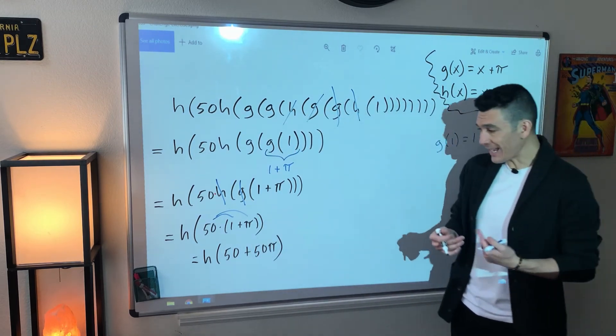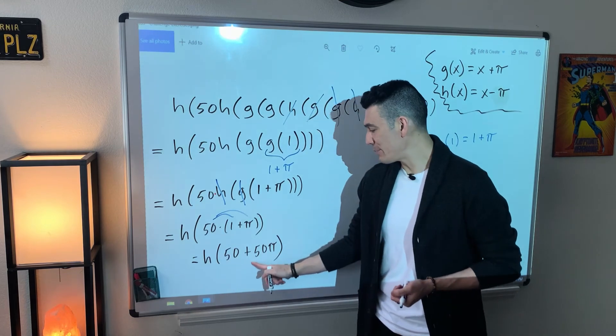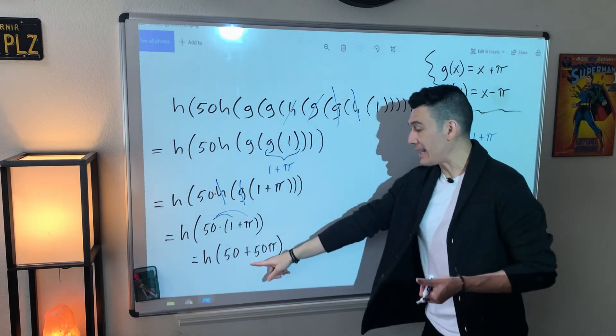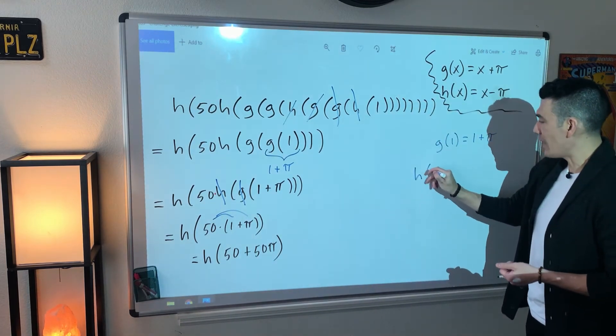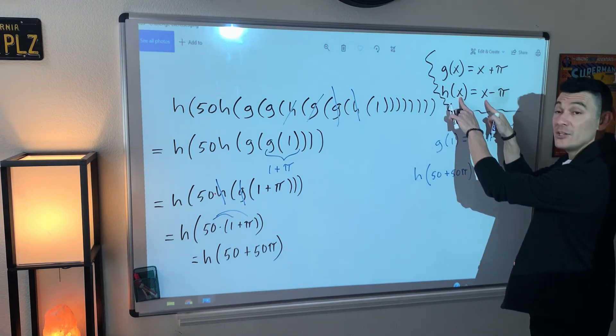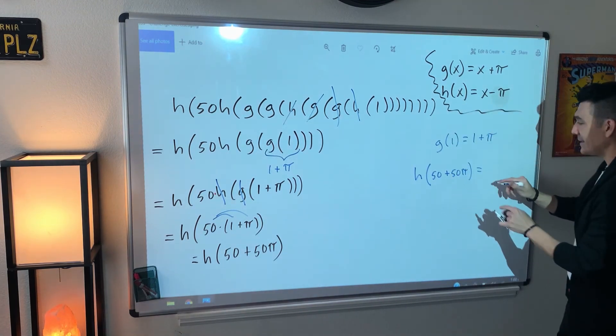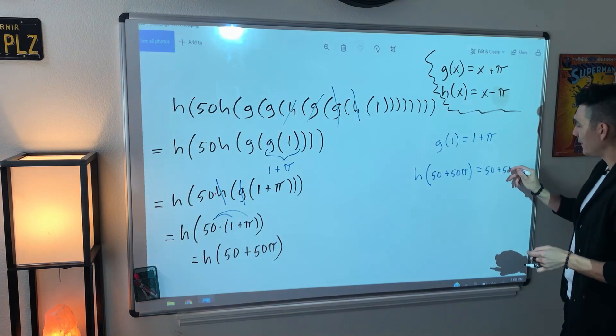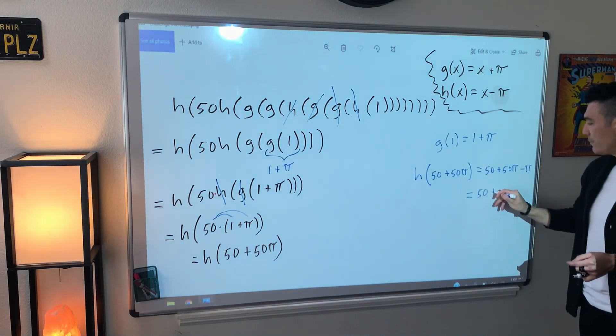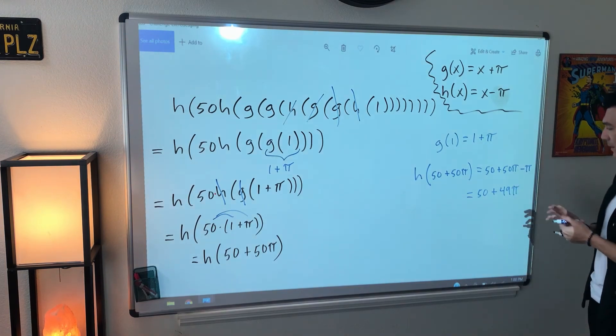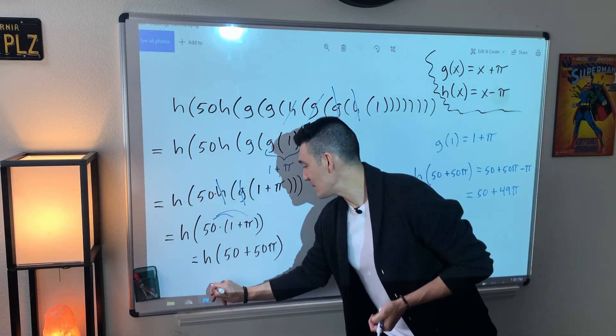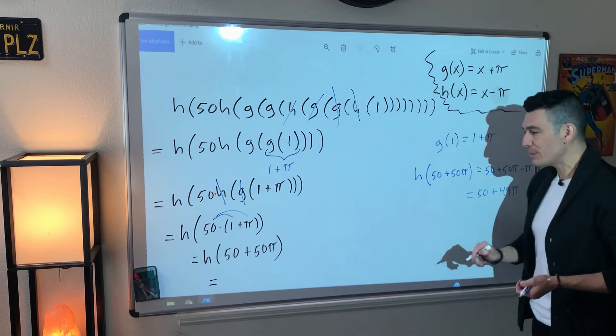And so now to finish this exercise, go to function h and plug in 50 plus 50π. So we can go to equation h, which is here, and we can plug in that as the input. So h of 50 plus 50π would equal, well, whatever you put there, you put there. So I'm going to copy and paste the input here. 50 plus 50π. And then it says minus π, which of course is 50 plus 49π, because 50π minus 1π is 49π. And so our final answer would be whatever that says, 50 plus 49π.